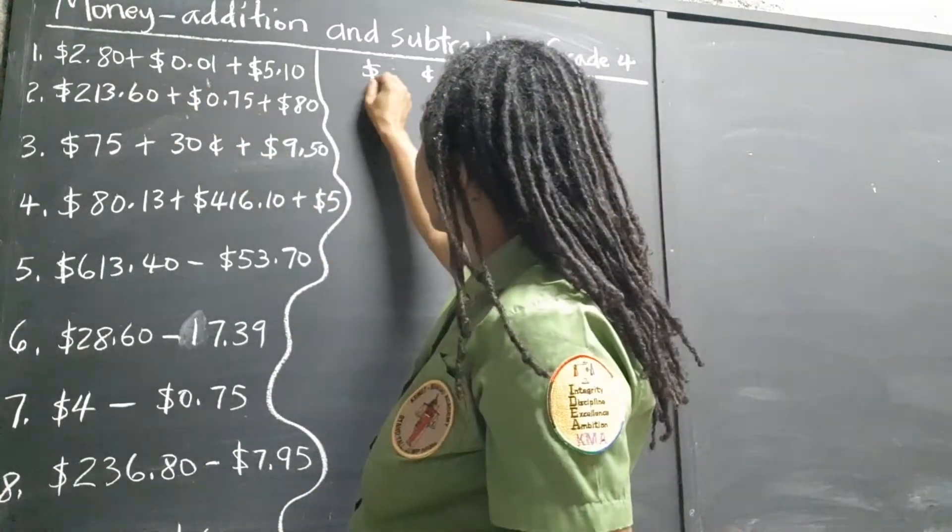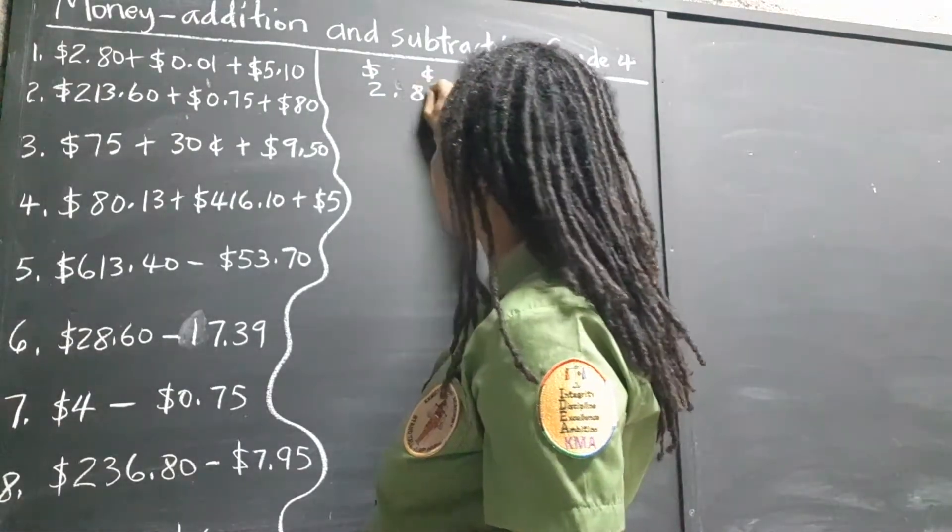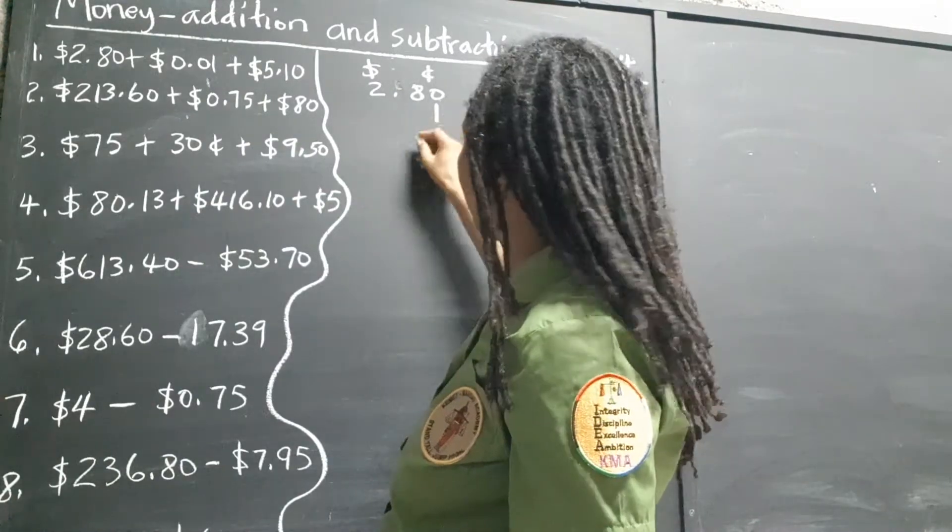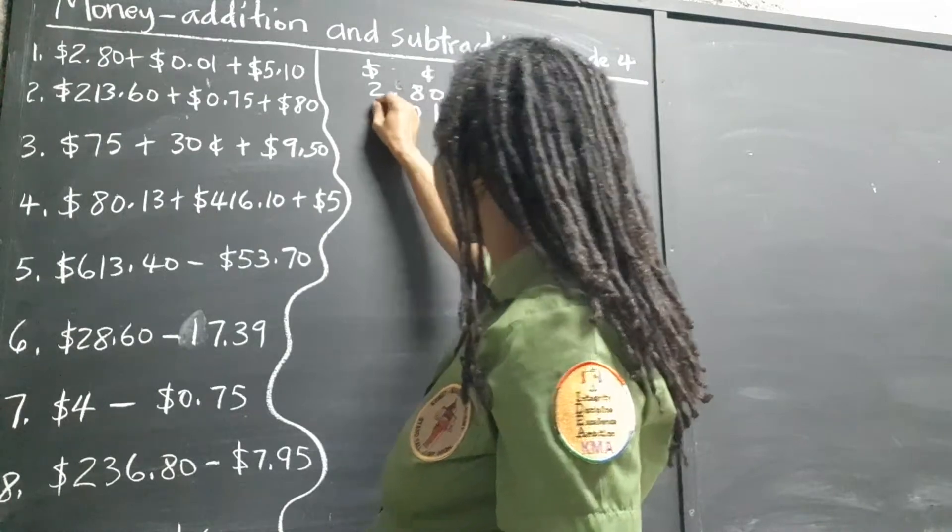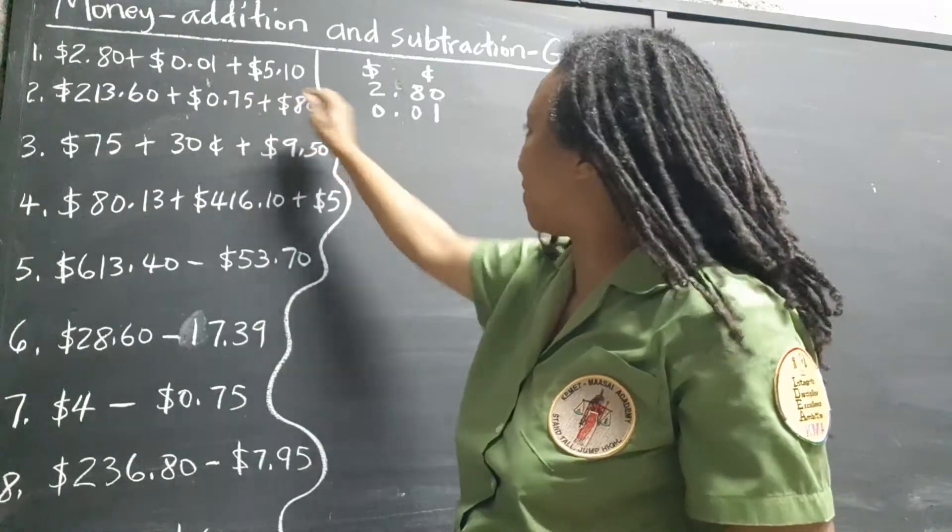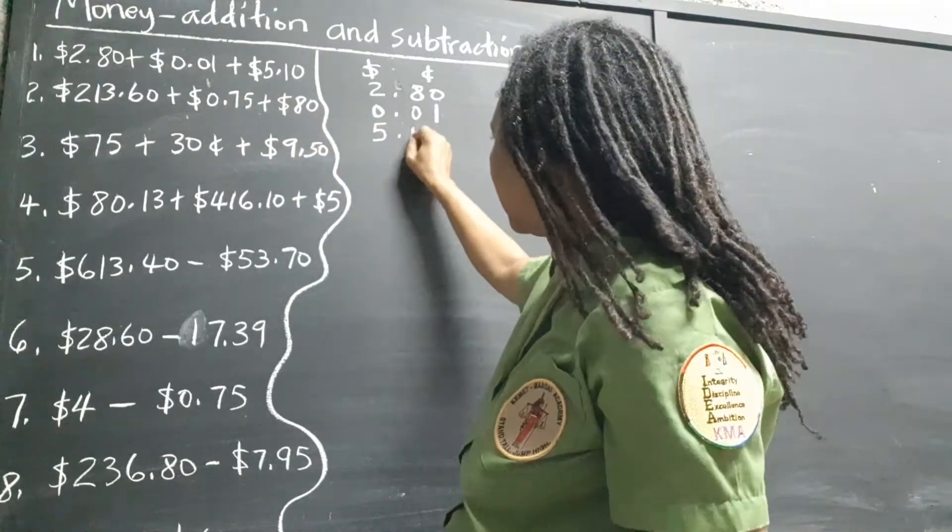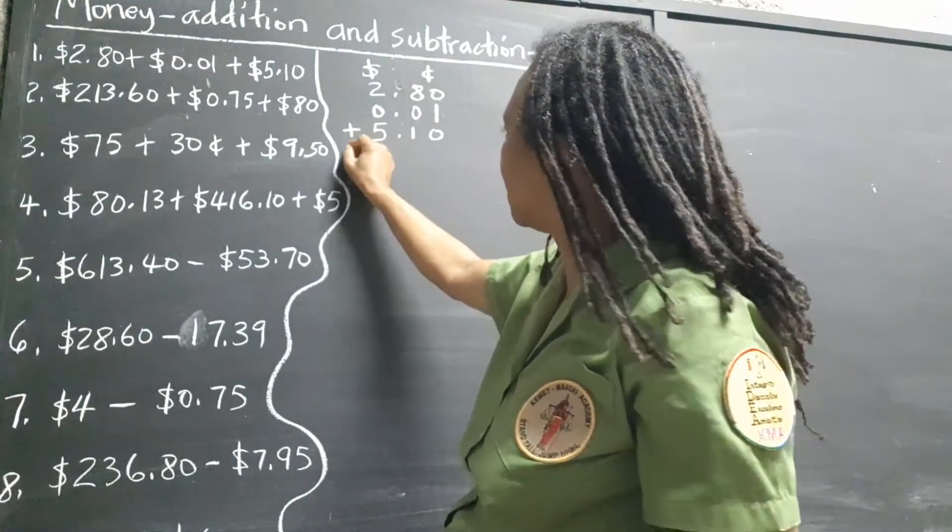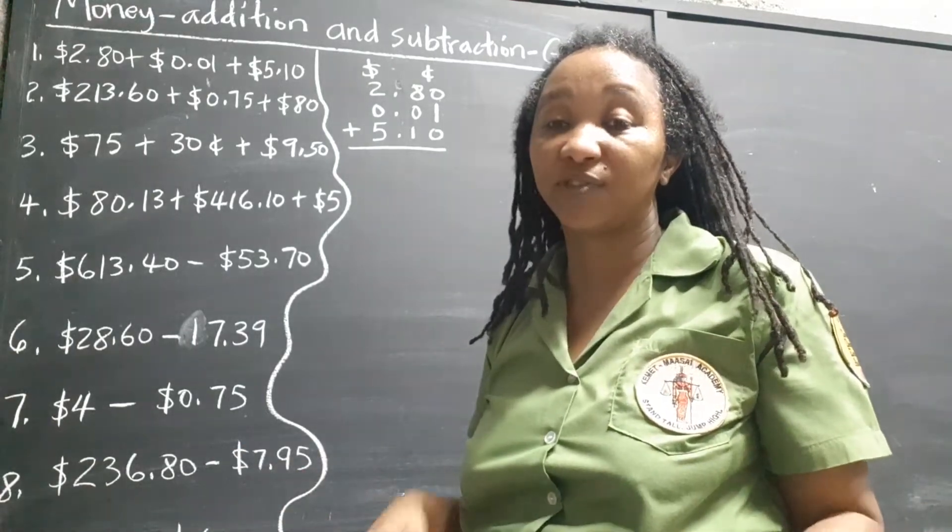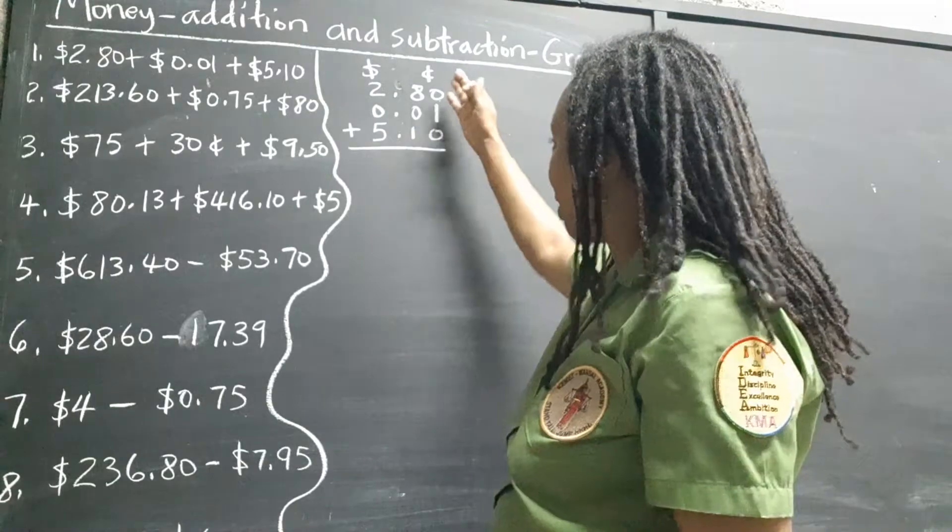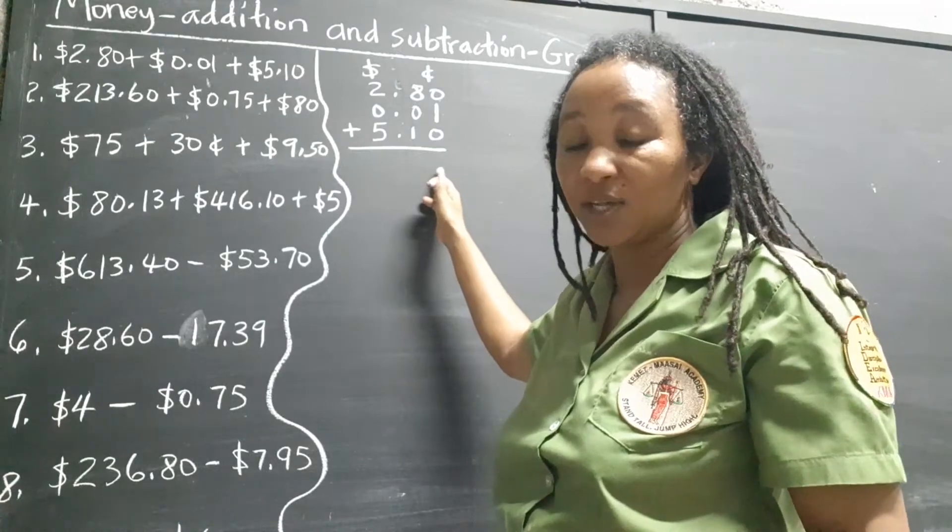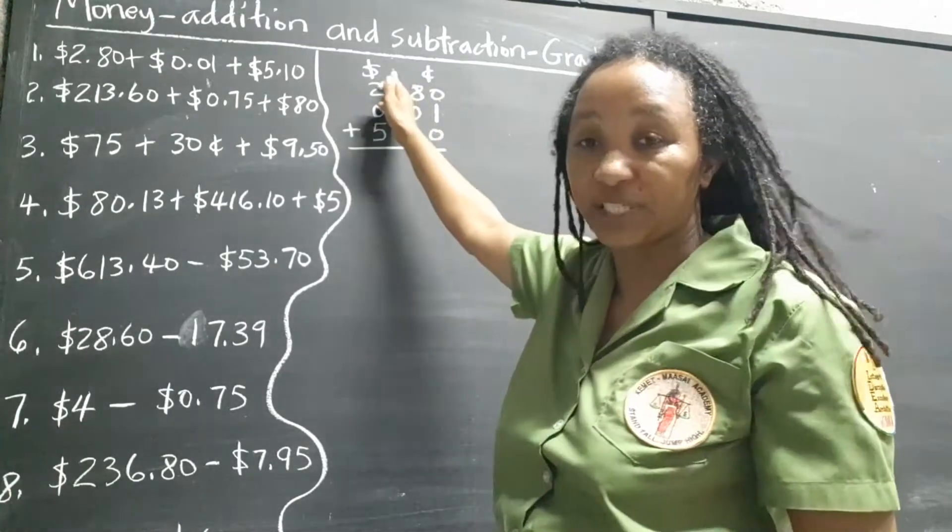So we have $2.80. This is just one cent. So the one is actually lining up there. Notice very carefully where I'm lining them up. That's how we write one cent. And we have $5.10. So now we add. Once we have them lined up, we're pretty much set. We just have to follow the basic rules of addition using the place value system. We cannot put a digit that is more than nine. So if we get anything more than nine, we just convert it to the next place.